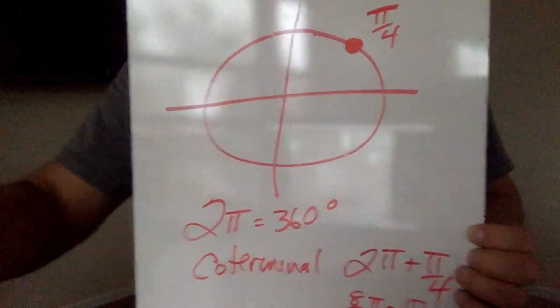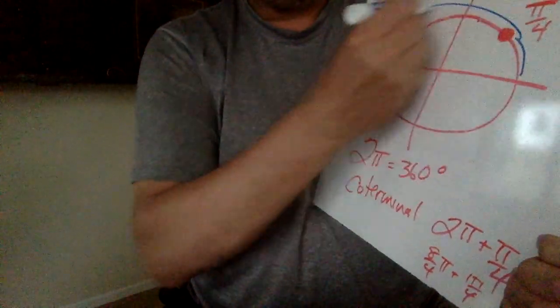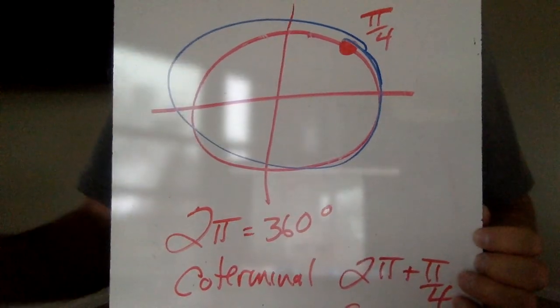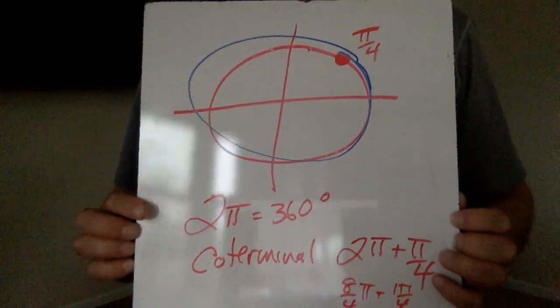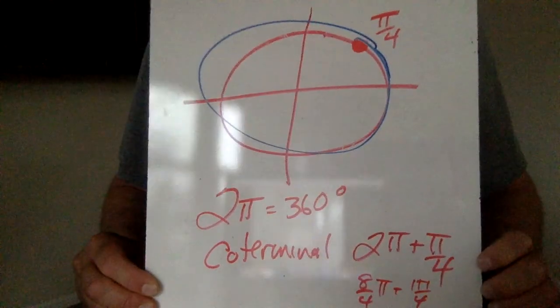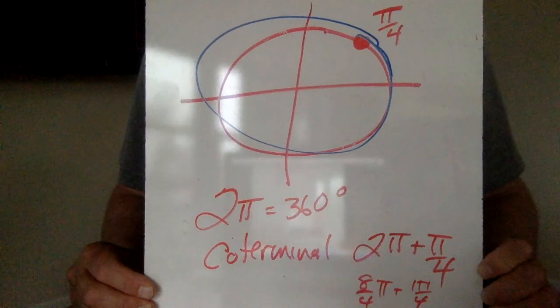Say, if you were to go around again, you would have gone around 2 pi, which is the same as 360. We need common denominators. 2 pi will become 8 pi over 4.